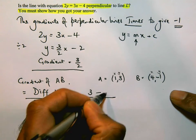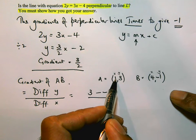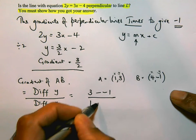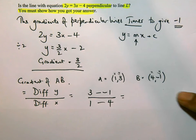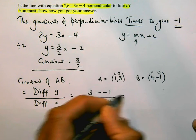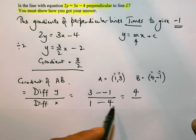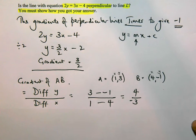And then I'm going to do the differences in the x's: 1 take away 4. Now this is a bit of working that you have to show so that they actually see your workings. 3 minus -1, so in other words 3 + 1 is 4, over 1 - 4 is -3. So that is the gradient of the line AB.